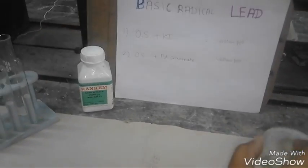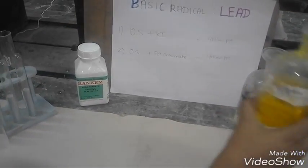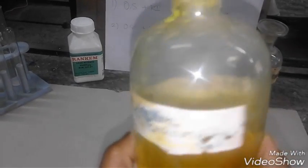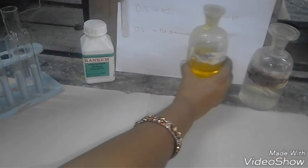Here is the second test tube for the confirmatory test for lead. To a small amount of original solution, potassium chromate is added. Potassium chromate itself is a yellow liquid.